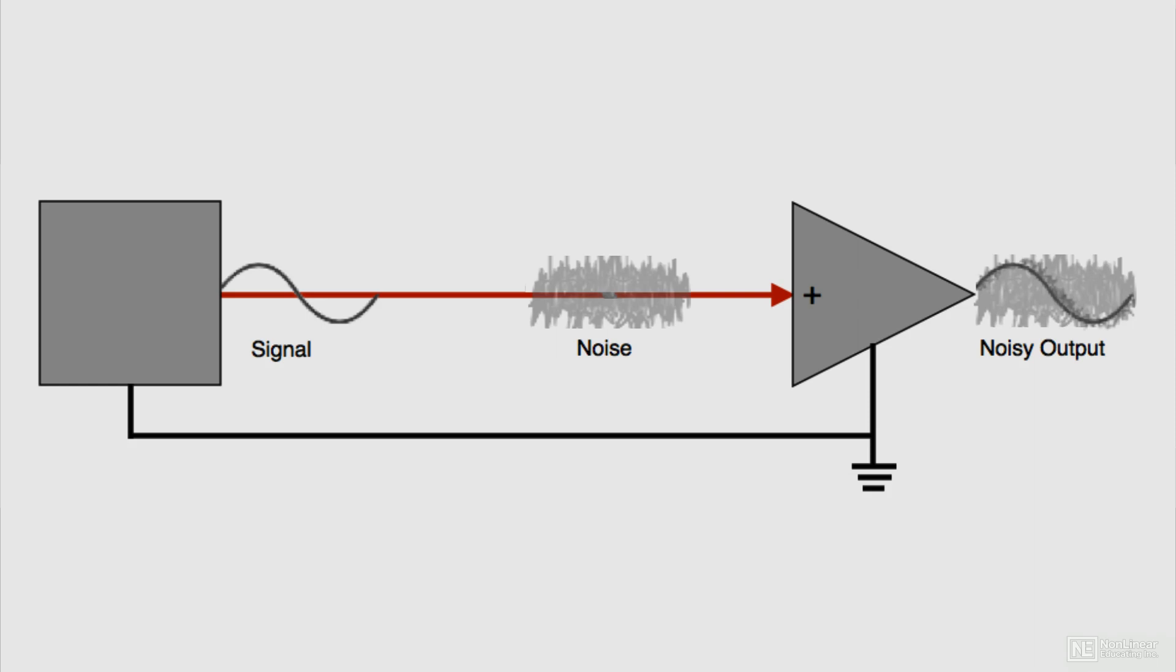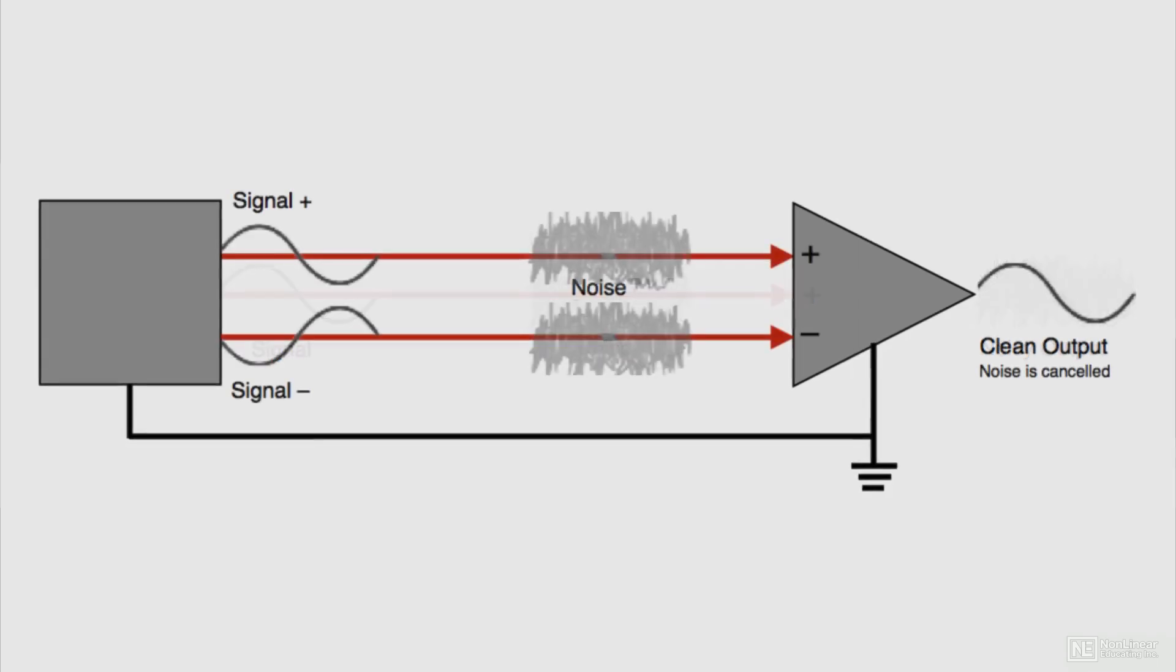Remember, audio signals are alternating currents. A balanced cable uses three wires: hot, neutral, and ground.